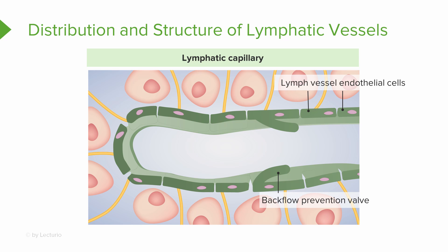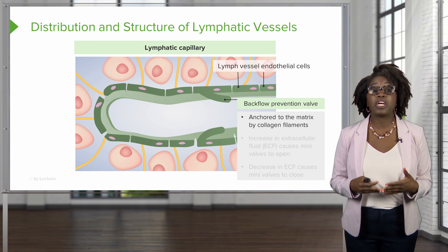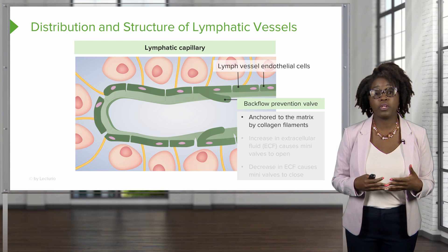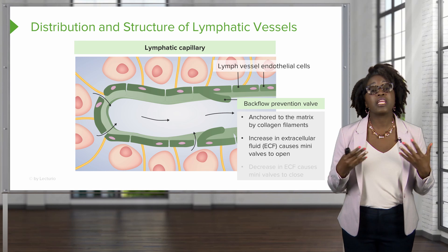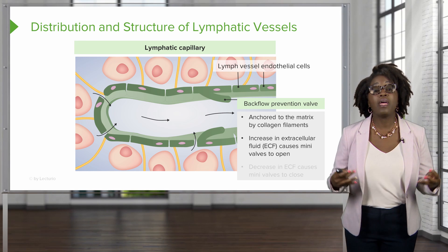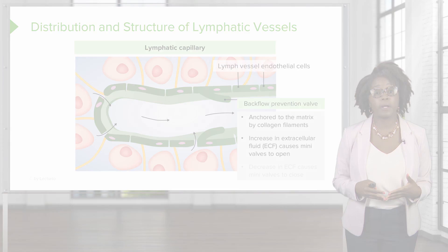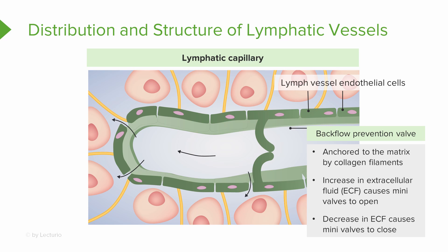Increased permeability of these lymphatic capillaries is due to multiple specialized structures. Two of those include the fact that endothelial cells overlap very loosely to form one-way valves. Just like in the veins we have valves, we also have valves in these vessels. The mini-valves are going to be anchored by collagen filaments to the matrix, which increases the extracellular fluid volume as these mini-valves open. The decrease in extracellular fluid will cause mini-valves to then close.